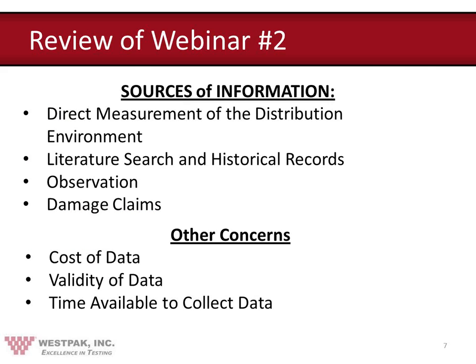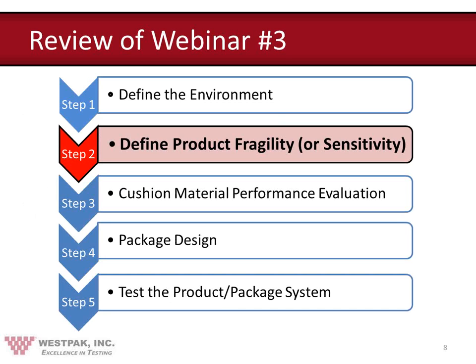Observation is not always advised — for example, seeing a box dropped from four feet but not being there at that point. Damage claims are when, at the end of transportation, you look at your damage percentages and try to figure out where that damage came from. Concerns with direct measurement include cost, time — you need enough measurements, maybe 30 trips, to fully map the environment — and data validity, since anomalies like a forklift running into your package shouldn't overly influence your results.